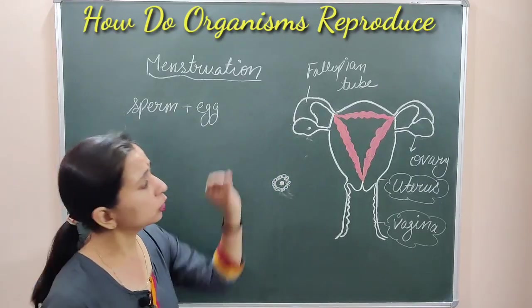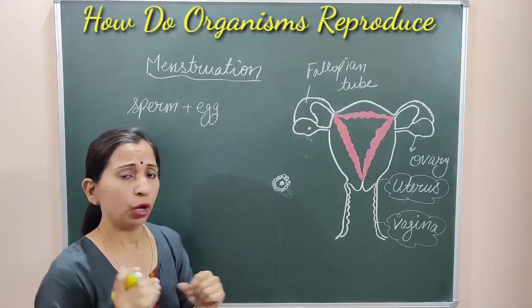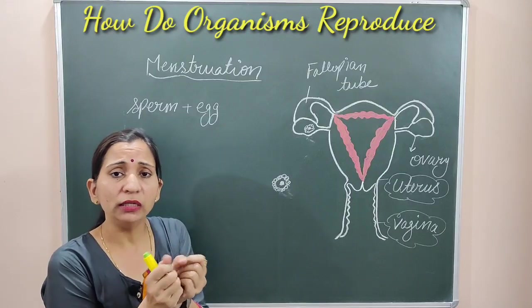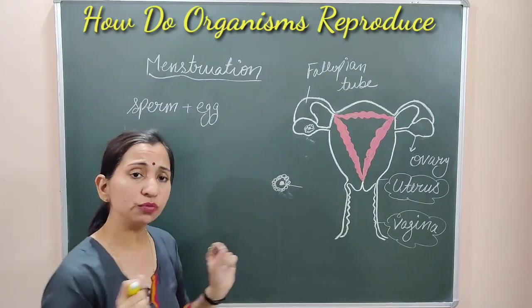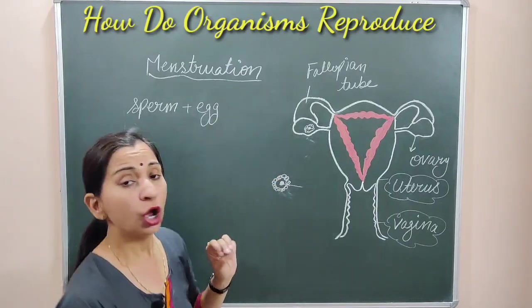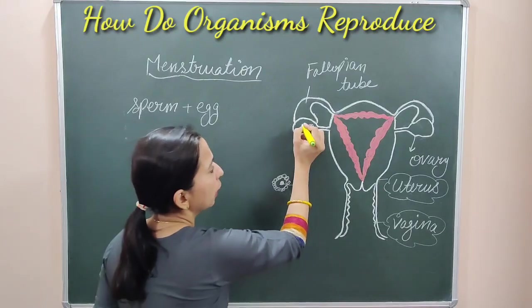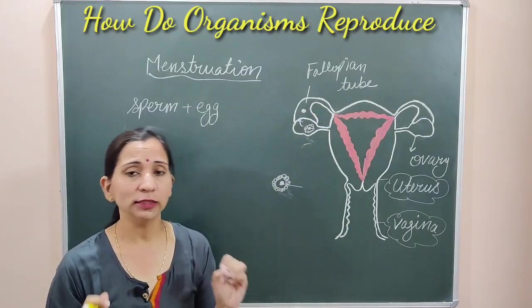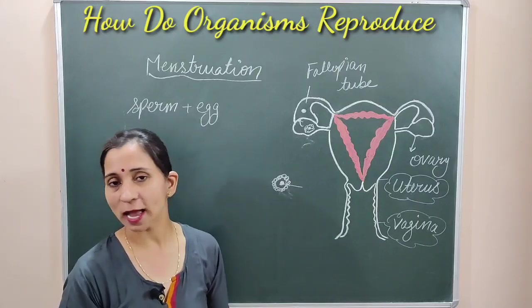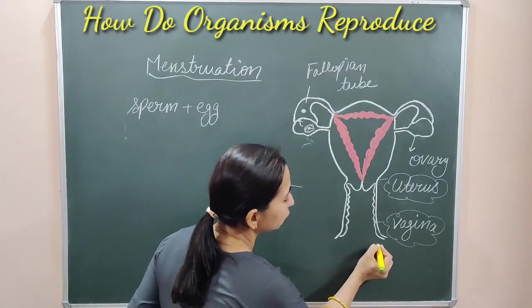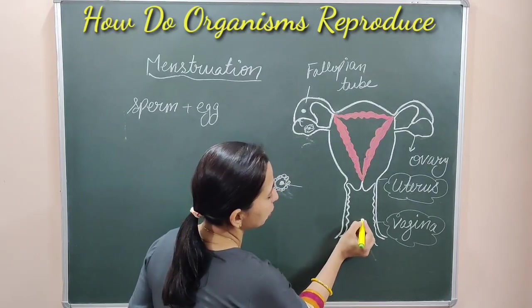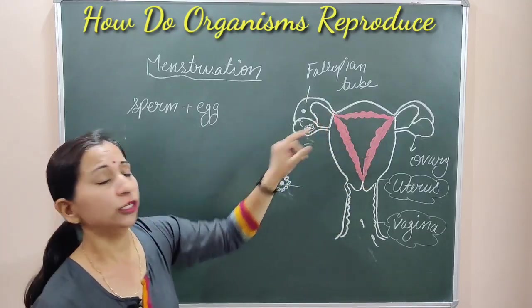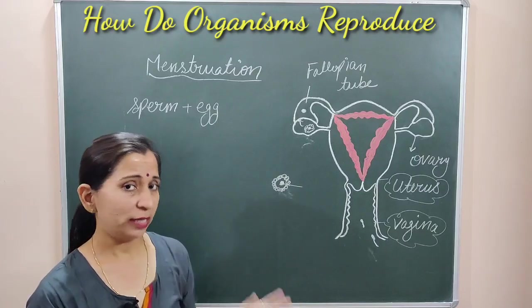When it reaches the puberty stage, these eggs start maturing due to the effects of hormones secreted by the endocrine glands. Each ovary secretes one egg in alternate months. These follicles are formed inside the ovary, and when the time of release comes, the follicle bursts and the egg inside is released. After releasing, this egg goes inside the fallopian tube.